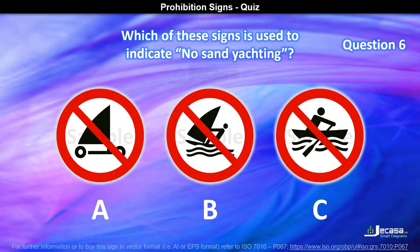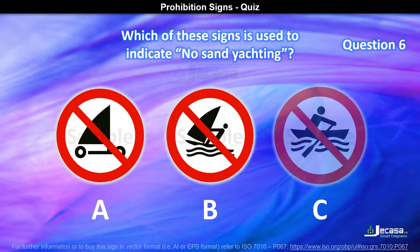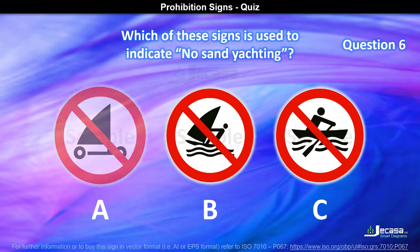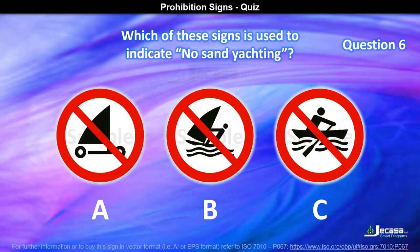Question 6. Which of these signs is used to indicate no sand yachting? Is it A, B, or C? The answer is A.